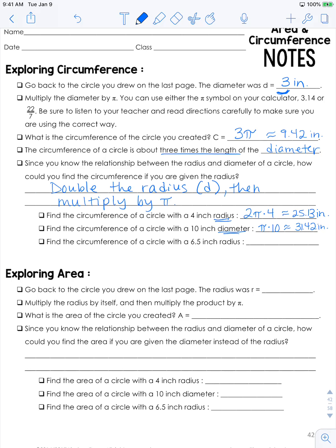Circumference of a circle with a 6.5 inch radius: 2π times 6.5 is approximately 40.84 inches.